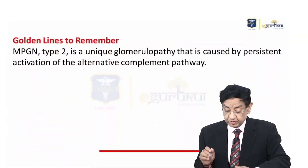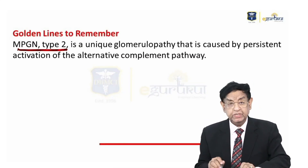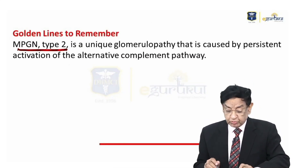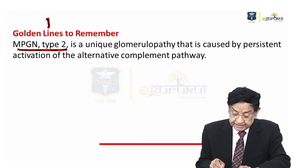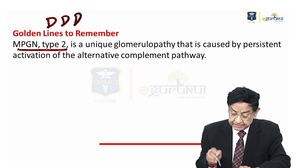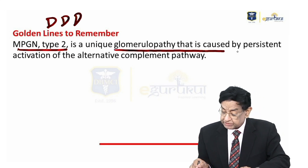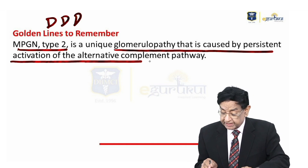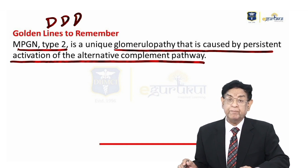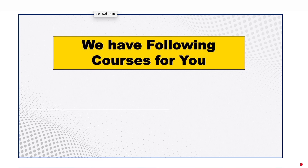Golden line to remember: MPGN type 2, also known as dense deposit disease, is the unique glomerulopathy caused by persistent activation of the alternative complement pathway.